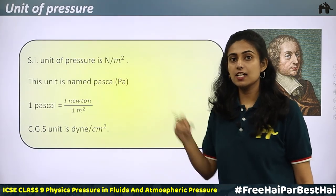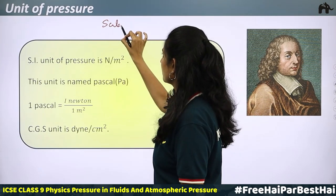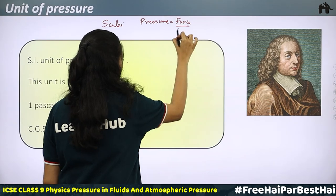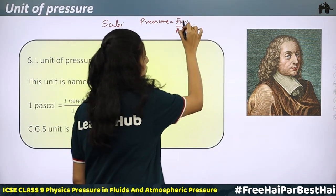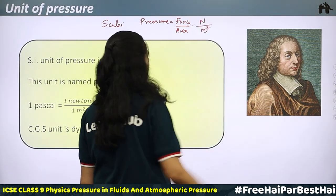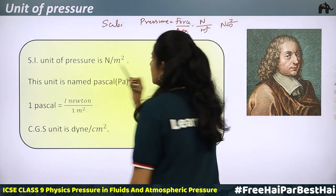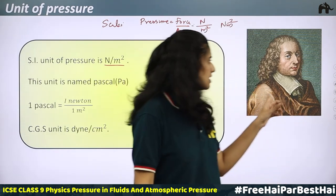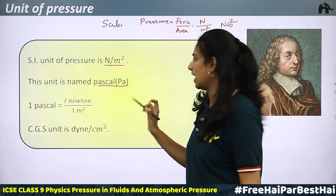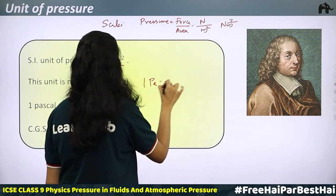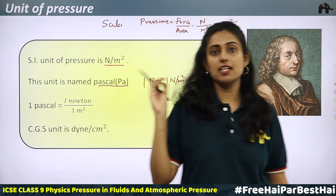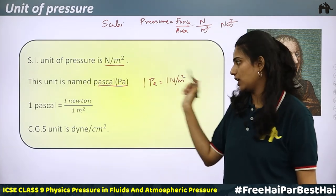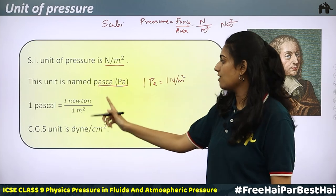Thrust is a vector quantity, but pressure is a scalar quantity. Pressure equals thrust divided by area, so its unit is Newton per meter squared (N/m²), also written as Nm⁻². The SI unit of pressure is Newton per meter squared. There is another unit named after scientist Blaise Pascal: 1 Pascal (Pa) = 1 Newton per meter squared. So 1 Pascal is the pressure on a surface of area 1 m² when a force of 1 Newton is exerted.